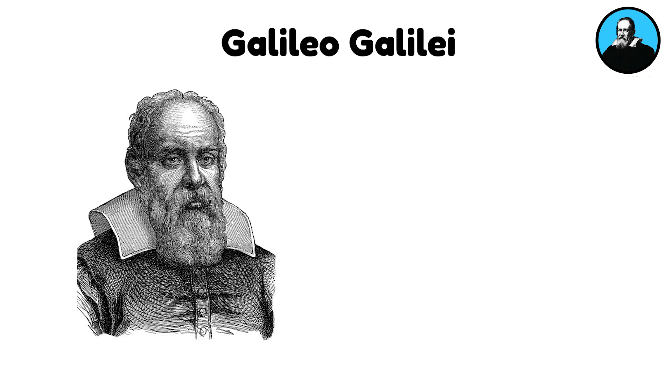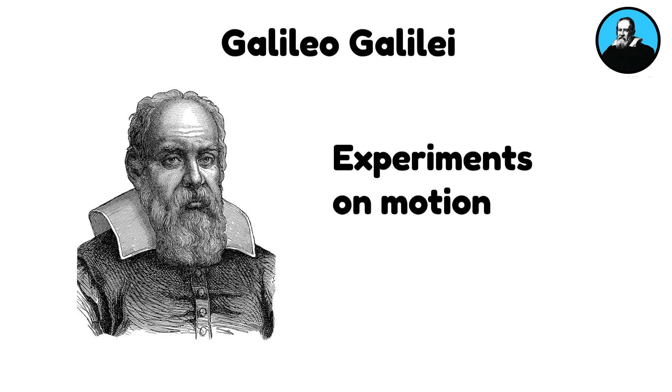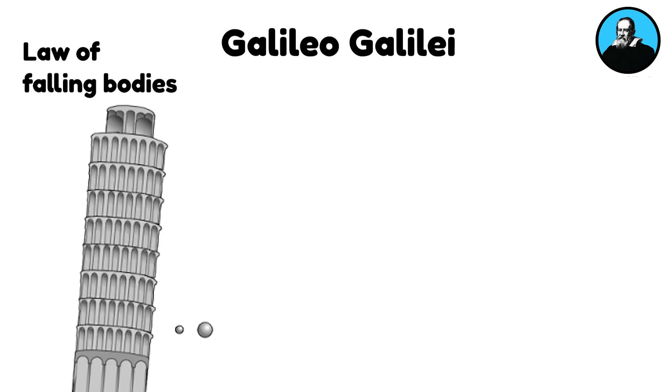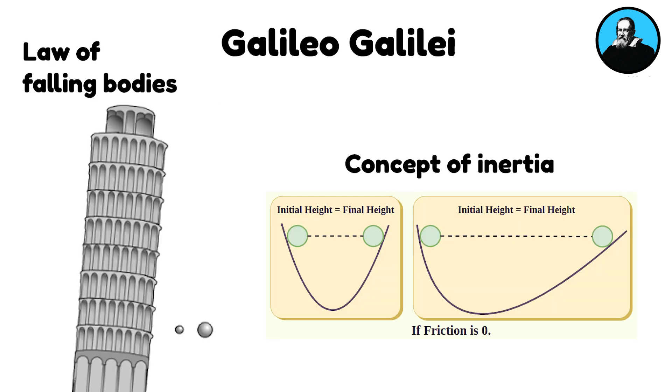Galileo conducted experiments on motion, leading to the formulation of the law of falling bodies and the concept of inertia, laying the groundwork for classical mechanics.